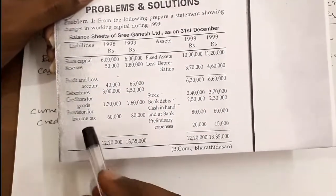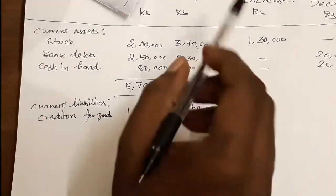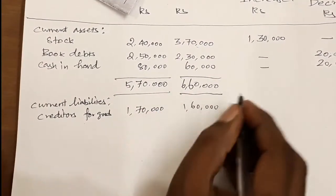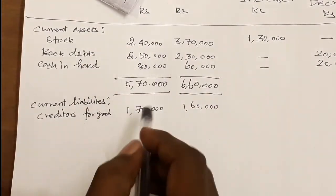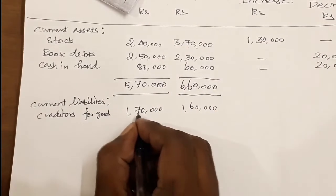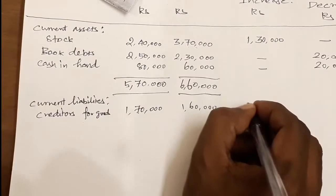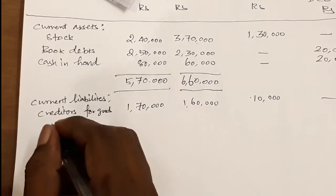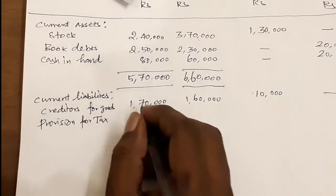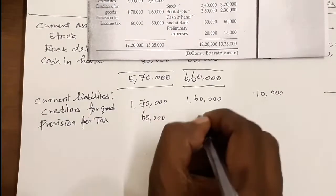Provision for income tax: we are going to include this amount. Now, taking the opposite side and comparing the balance, the price difference between 1,70,000 and 1,60,000 gives 10,000. Provision for tax: 60,000 and 80,000.